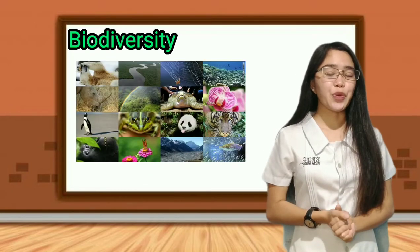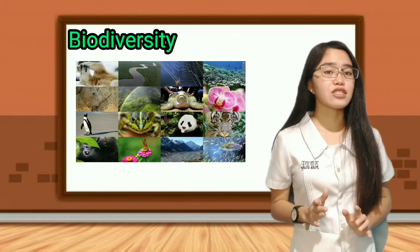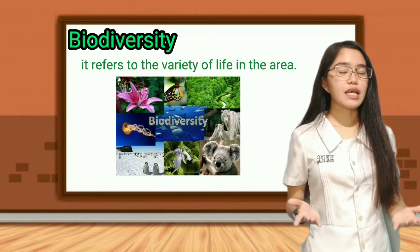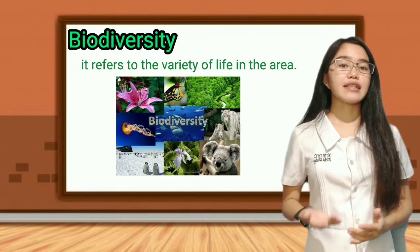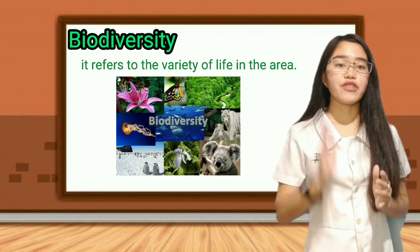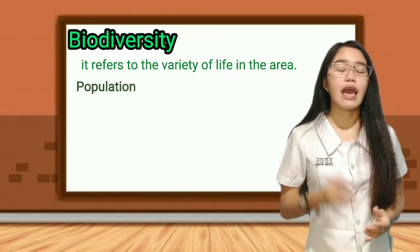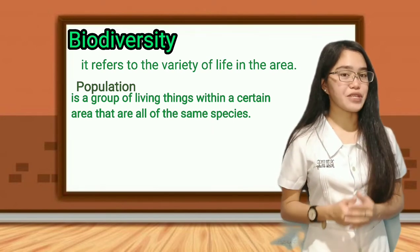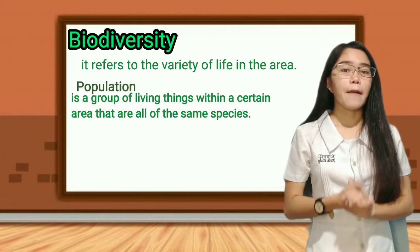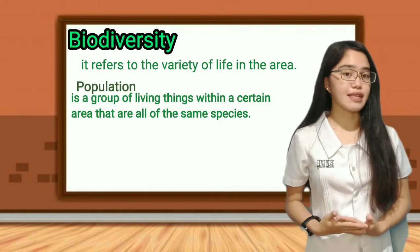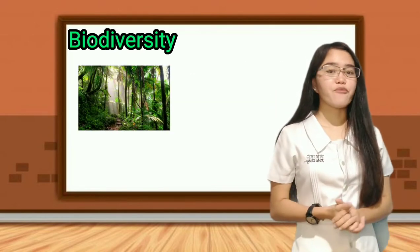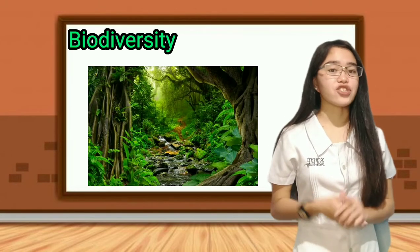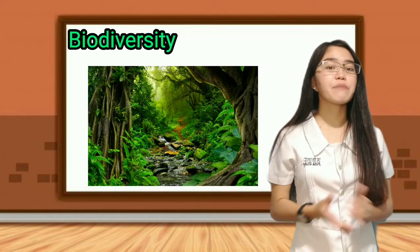I want to emphasize that life depends on life. Animals cannot exist without green plants, and living things create niches for other living things. When we say biodiversity, it refers to the variety of life in an area. Within biodiversity, we have what we call population — a group of living things within a certain area that are all of the same species.